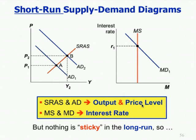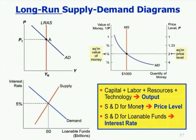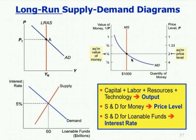In the long run, these models give us: output is determined by capital, labor, resources, and technology — that's the natural rate of output or where the long run aggregate supply curve is. The supply and demand for money determines the value of money and the price level. And the interest rate is determined by the supply and demand for loanable funds. So we have somewhat different models in the short run versus the long run.